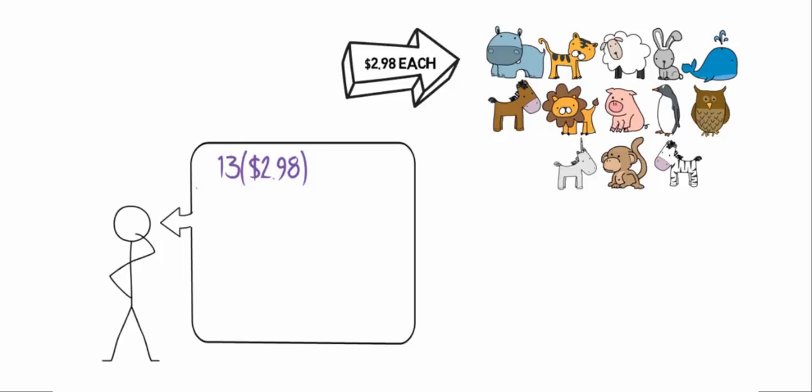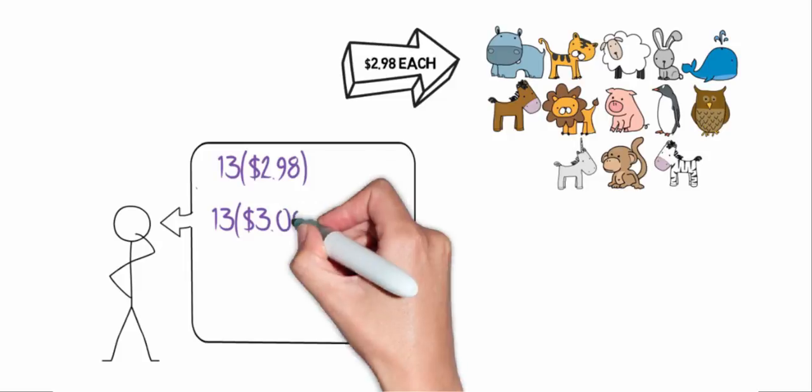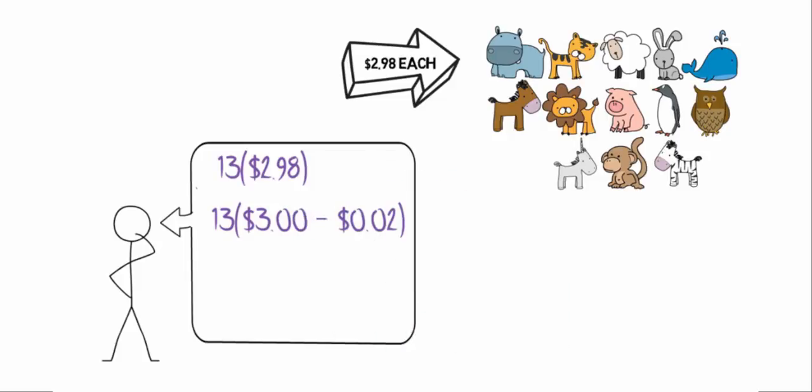So what I'm going to do is this. I'm going to rewrite that problem as thirteen times the quantity of three dollars minus two cents.